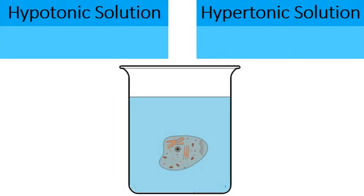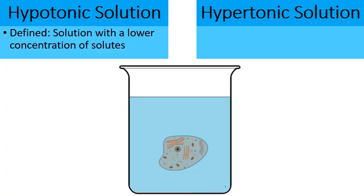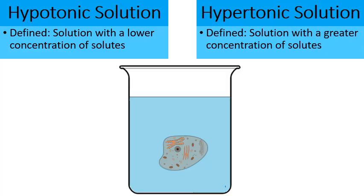A hypotonic solution is one with a lower concentration of solutes, contrasted with a hypertonic solution, which has a greater concentration of solutes. In my picture I have a beaker filled with fluid and an over-exaggerated size of a cell on the inside.